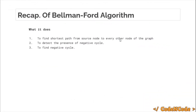So, recap to the previous lecture. We have already seen that Bellman-Ford can be used to find the single shortest path — you are given a source node and you need to find the shortest distance to every other node from this source node in the given graph. Second, we know that this algorithm can be used to detect the presence of a negative cycle. Third, it can be used — or simply you can modify this algorithm — to actually tell which is the cycle having negative weight.